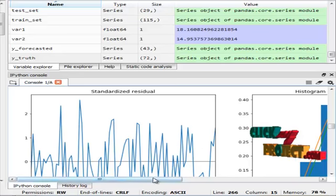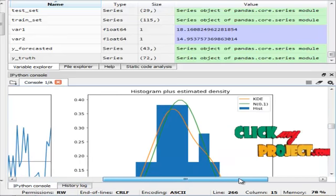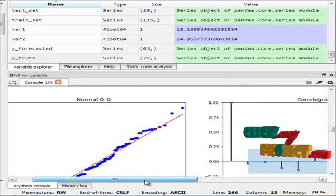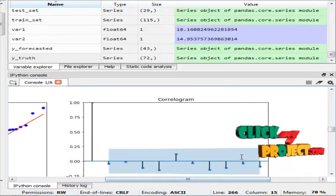This is the standardized residual visualization. This is histogram visualization, histogram plus estimated density visualization. This is the normal Q-Q plot visualization. This is the correlogram visualization.